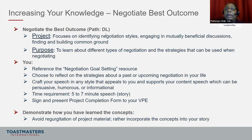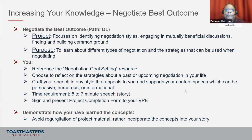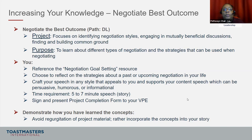Let's start with the Dynamic Leadership path: Negotiate Best Outcome. This focuses on identifying negotiation styles, engaging in mutually beneficial discussions, and finding and building common ground. The purpose is for you to learn about different types of negotiation and the strategies that can be used when negotiating. Reference the negotiation goal-setting resource in your project, choose to reflect on strategies about a past or upcoming negotiation in your life, and craft your speech in any style — persuasive, humorous, or informational. The time requirement is five to seven minutes. Sign up, finish the project completion form, and submit it to your VPE.